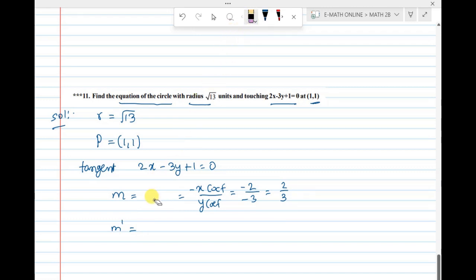So perpendicular slope, M dash, minus 1 by M, that means minus 1 by M is 2 by 3. Cross multiply, it will be minus 3 by 2. This in the future, tan theta equal to tan theta.